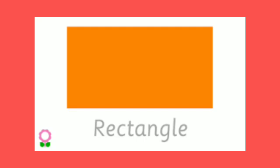Now observe the surface of a table. How many edges does the surface have? There are four edges. How many corners does the surface have? There are also four corners. Now, what is the shape of the surface of the table? Very good — it is rectangle in shape.